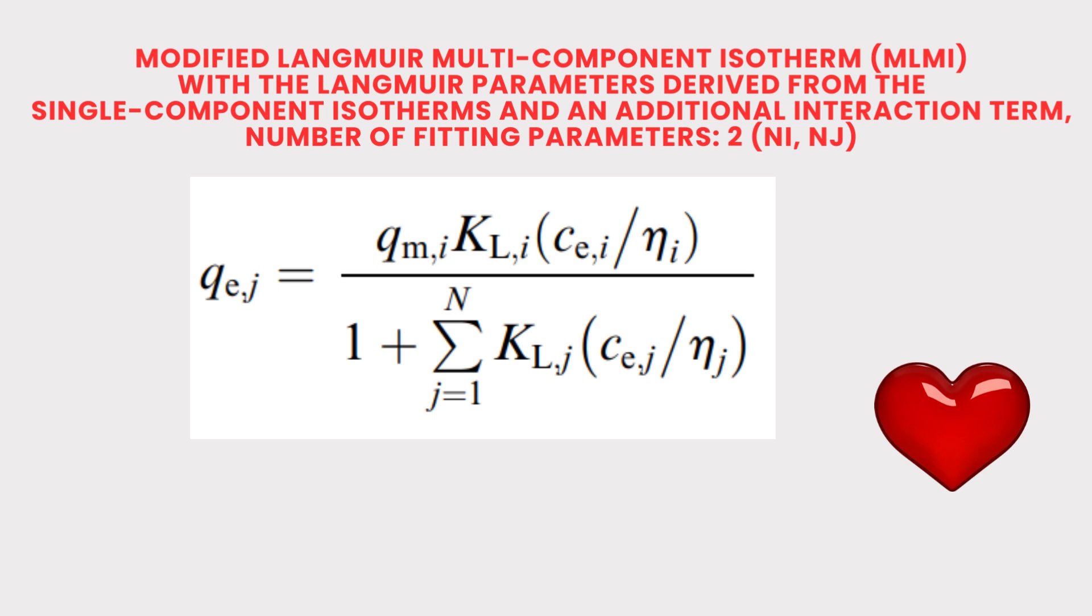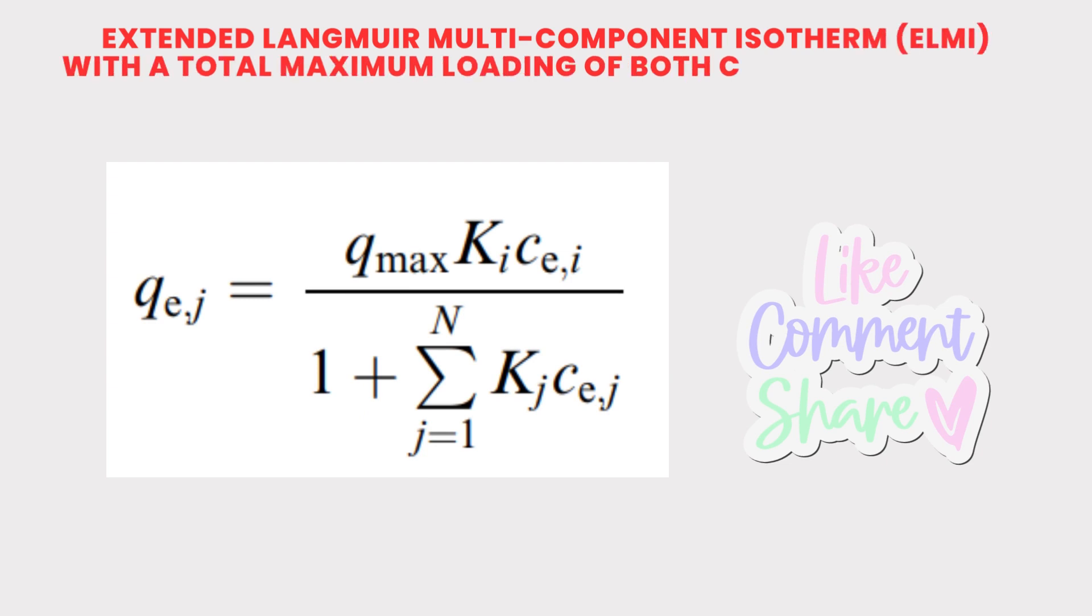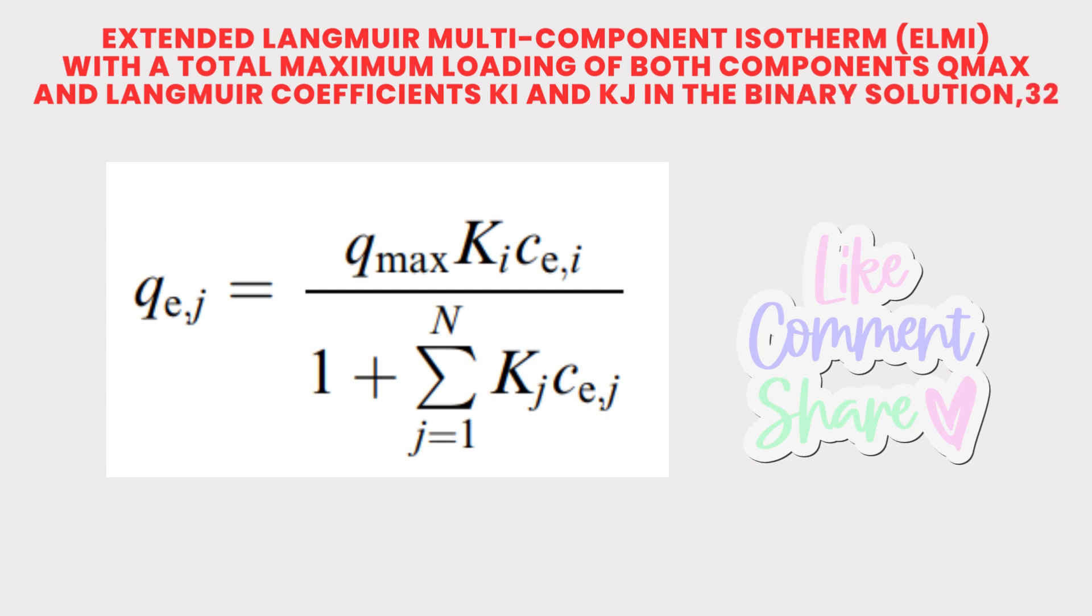Then comes extended Langmuir multi-component isotherm with a total maximum loading of both components and Langmuir coefficient ki and kj in the binary solution. Number of fitting parameters 3, and this is the equation.